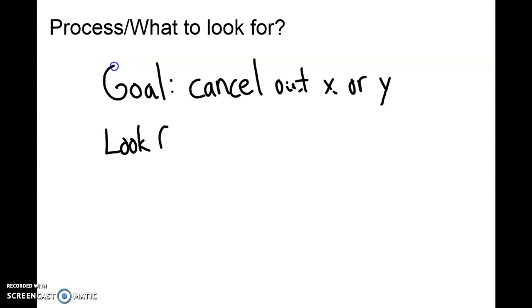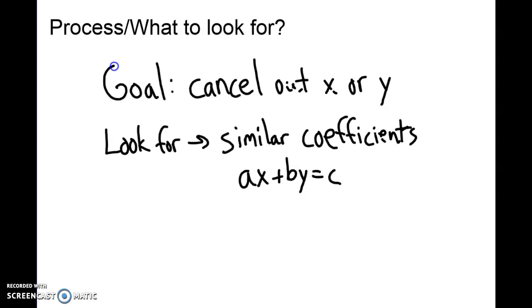The process and what to look for here: look for similar coefficients. What that means is I want something to match up. For example, let's talk about this hypothetically. We have ax plus by equals c, and then what I want is maybe something like negative ax plus dy equals e.